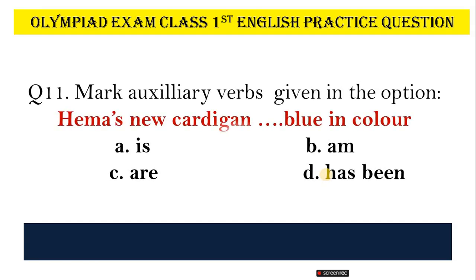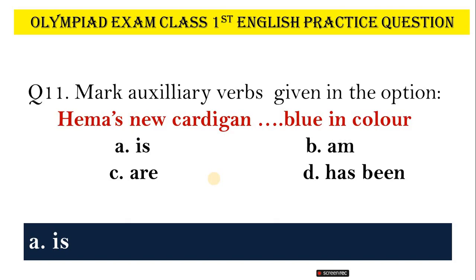Question No. 11. Mark the auxiliary verb given in the options. Sentence: Hema's new cardigan is blue in color. Options: A, Is; B, Am; C, Are; D, Has been. Correct answer is Option A, Is. Hema's new cardigan is blue in color.